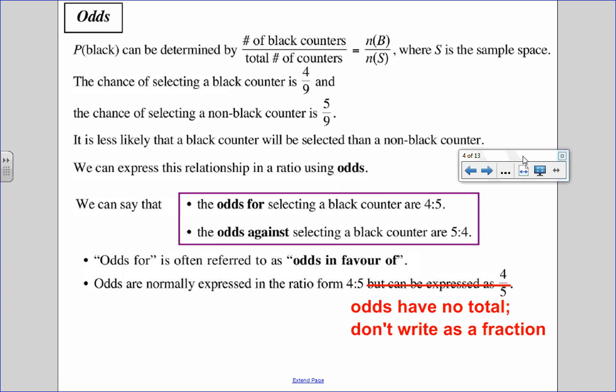Odds are a ratio or a comparison of odds for and odds against. So how many ways can something happen to how many ways can it not happen? There is no total. If I talk about the odds for selecting a black counter, that would be four black counters to five not black counters. That's the odds for.